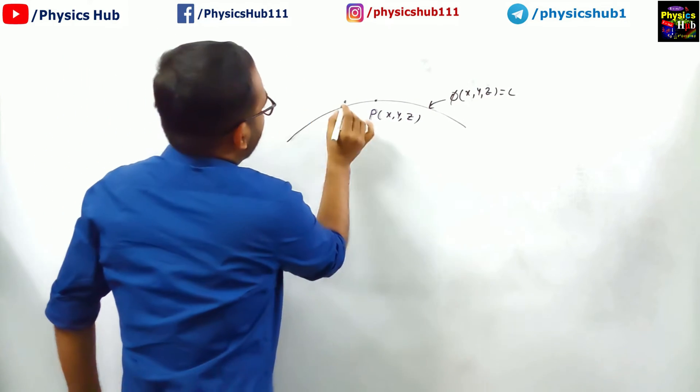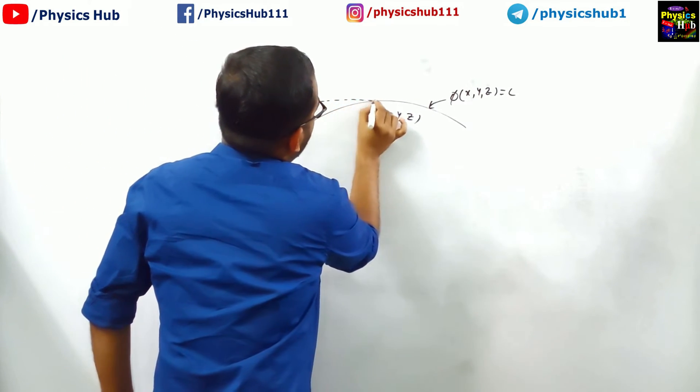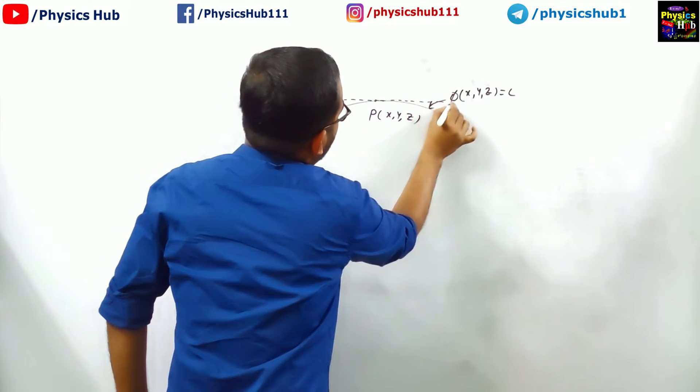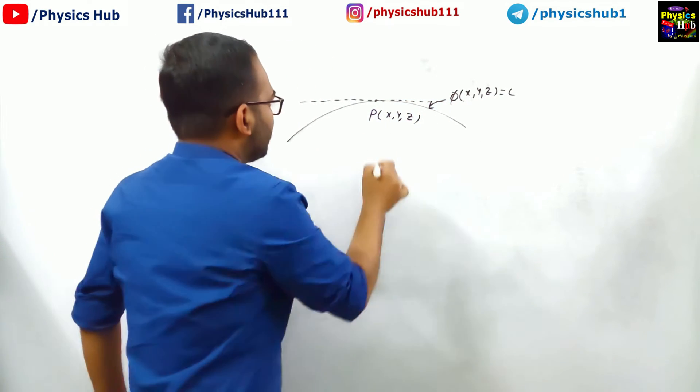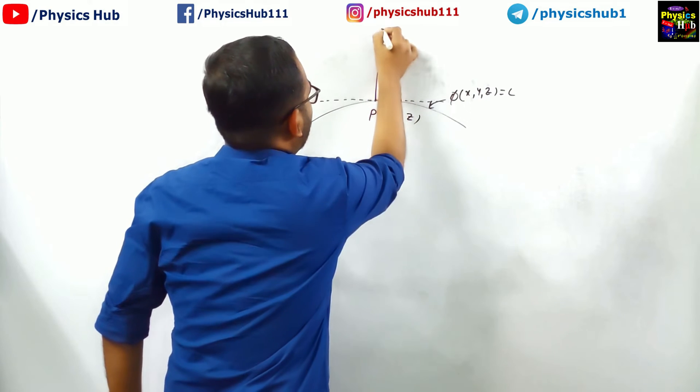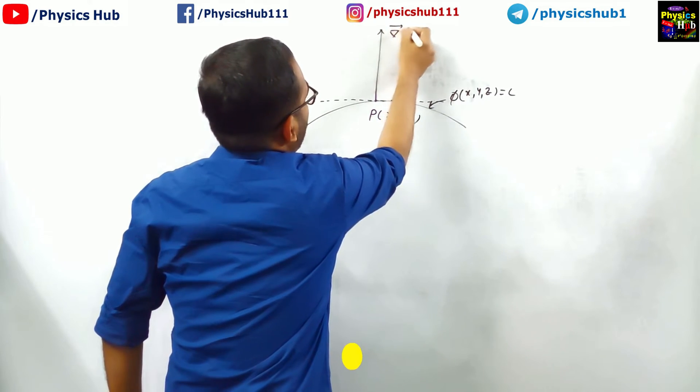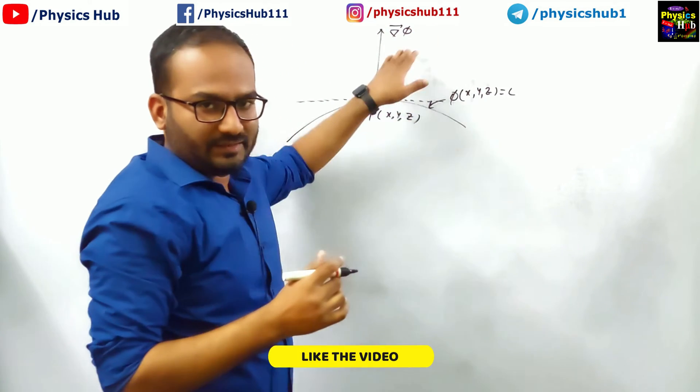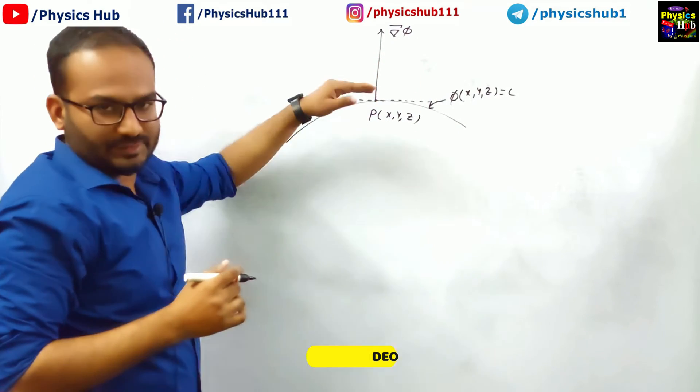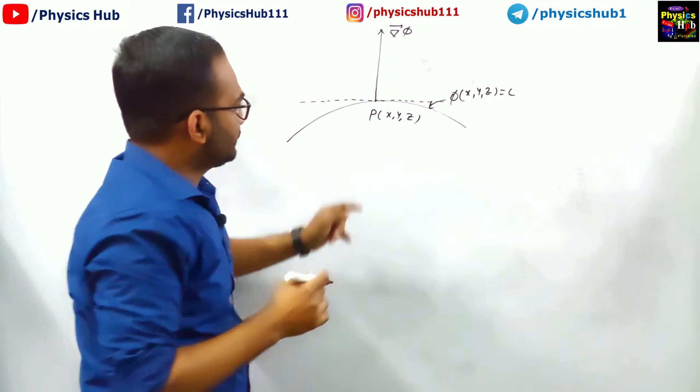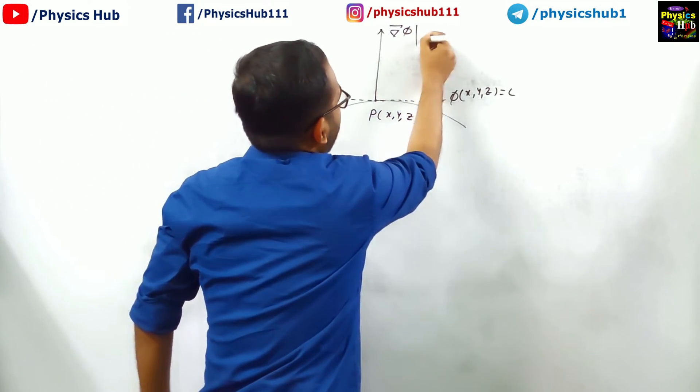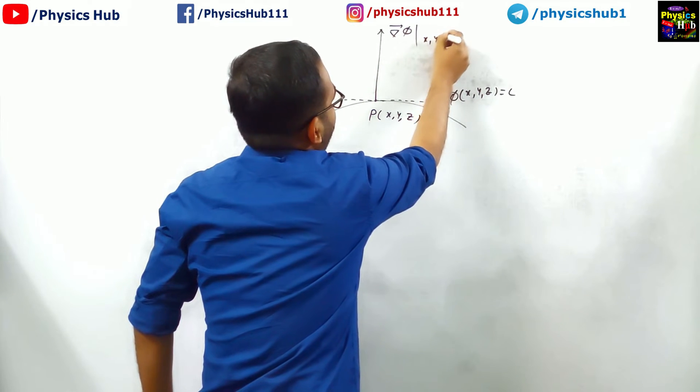If you draw a tangent like this, then you know the value of grad phi. This grad phi will be directed perpendicular to this point. This basically denotes grad phi evaluated at x, y, and z.